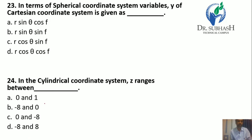Question 23: In terms of the spherical coordinate system variables, y of the Cartesian coordinate system is given by — in a spherical coordinate system, the variable y is represented as: